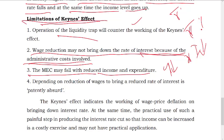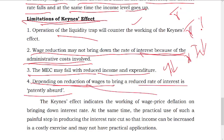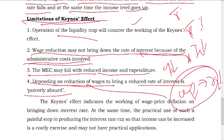Depending on the reduction of wages to bring down the reduced rate of interest is patently absurd. Wages and the interest rate do not work in that direct way. Depending on reduction of wages to bring down the reduced rate of interest is patently absurd.